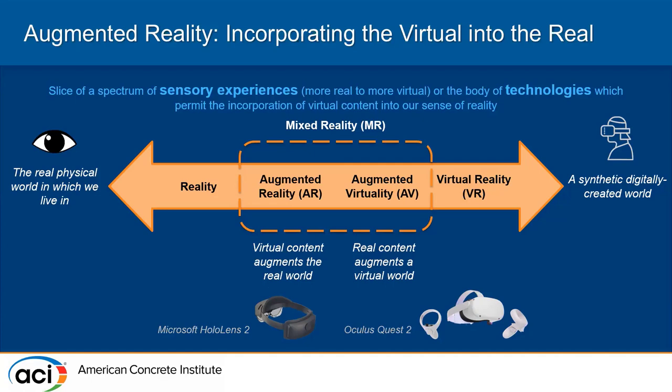On the other end we might have virtual reality, where nearly everything we see, hear, and possibly even feel, smell, or taste has been computer generated. AR lies somewhere in the middle of these two ends, where we have a mostly real world where virtual content is being incorporated. The Microsoft HoloLens 2 is an example of a technology which enables AR.